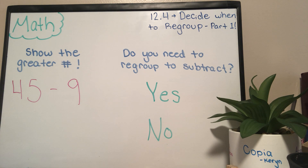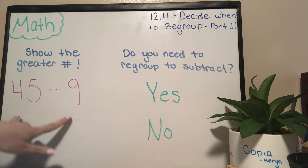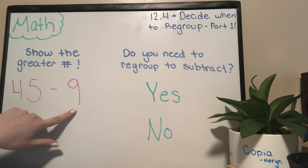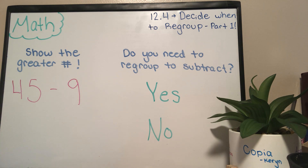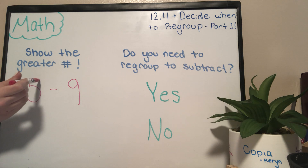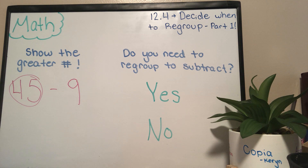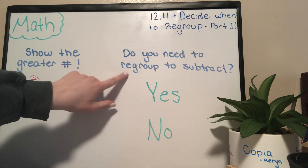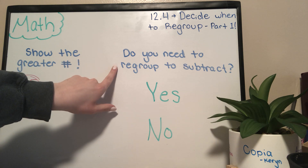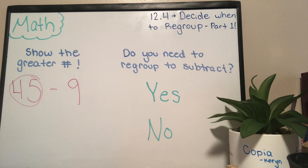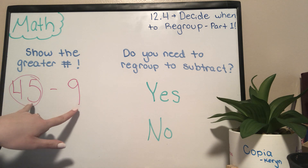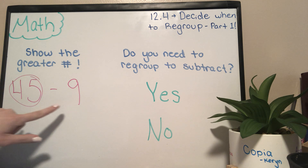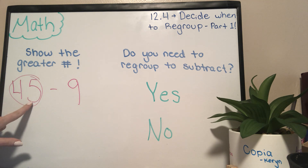45 minus 9. When the page is telling you to show the greater number, it wants you to circle the bigger number here. Which is the bigger number — 9 or 45? The bigger number here is 45. Now, we get to answer the question in the second column over here: do you need to regroup to subtract? What this question is asking you is, if you're looking at the 1s, can you subtract the 1s from the 1s in your greater number?